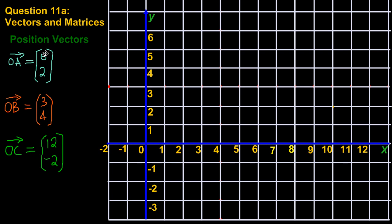Same question — here I've made a note of the position vectors given. OA is 6, 2. The 6 represents the movement on the X axis and the 2 represents the movement on the Y axis. Note you don't have to draw a graph in the exam; I'm doing this just to explain the fundamentals and the concept behind it. So here I'm at 6 on my X axis and going up to 2 on my Y axis — that would be the point 6, 2, and that is A.